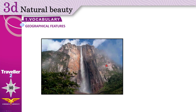Waterfall. The picture you see is of Angel Falls in Venezuela — it is the highest waterfall in the world. A waterfall is a place where water from a river or stream falls down over a cliff or a rock. Waterfall.